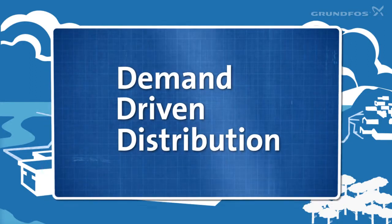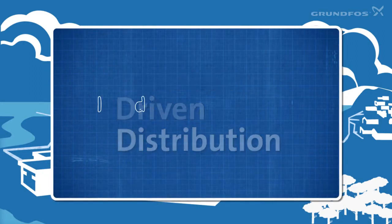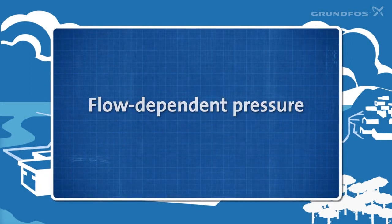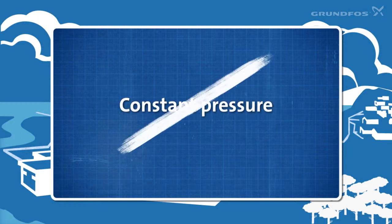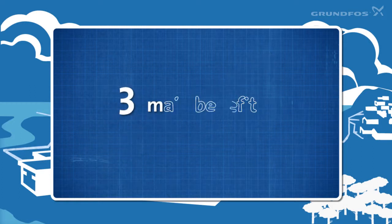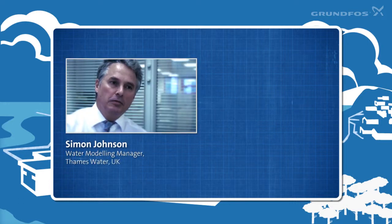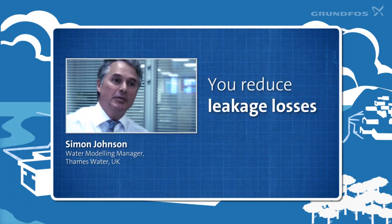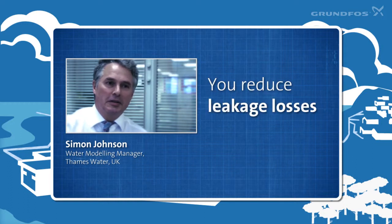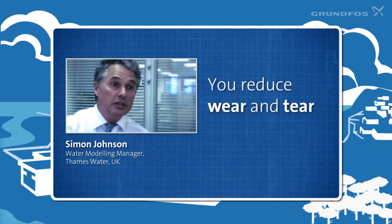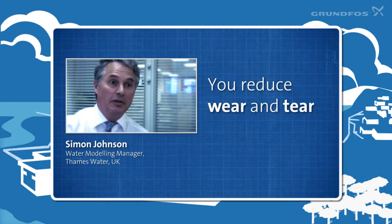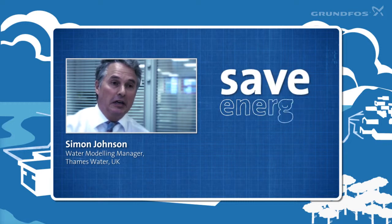A demand-driven distribution system uses flow-dependent pressure instead of constant pressure from the pump, and this creates three main benefits. As water modelling manager Simon Johnson from Thames Water explains: you reduce leakage losses, you reduce wear and tear, which cuts down maintenance costs and may even allow you to postpone investments in new assets, and you save energy.